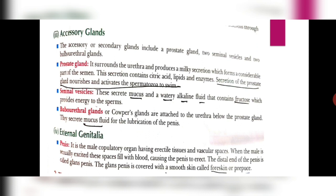The male external genitalia is known as the penis. It is the male copulatory organ which has erectile tissue and vascular spaces. When the male is sexually excited, these vascular spaces get filled with blood and the erectile tissue leads to erection of the penis. The distal end of the penis is known as the glans penis, which is covered with a skin-like structure called the foreskin or prepuce. That is all about the male reproductive system.